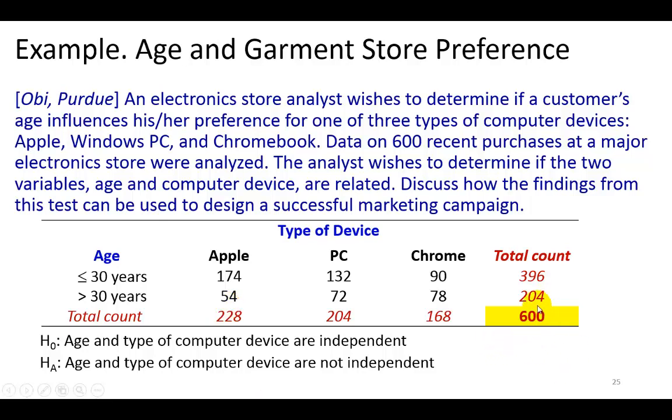we collected data on the type of computer devices purchased by 600 customers. And, as you can see here, 228 purchases were made of Apple computers, 204 Windows PC and 168 Chromebook. And, on this column margin here, we find that 396 of the buyers were aged 30 years and younger, 204 older than 30 years. So, what you see here are the observed outcomes. And, the null hypothesis here is, are age and type of computer purchased independent?